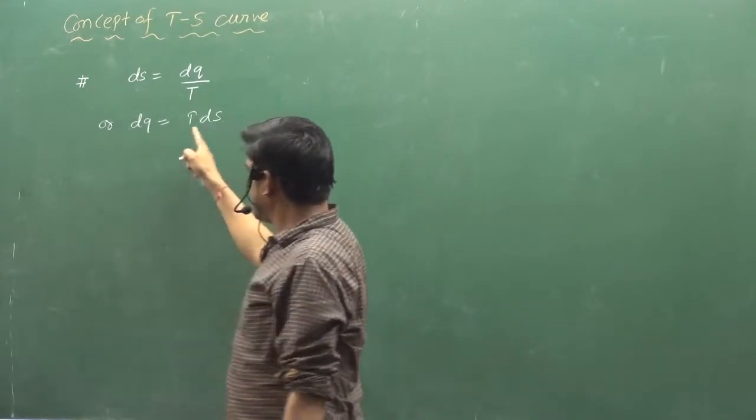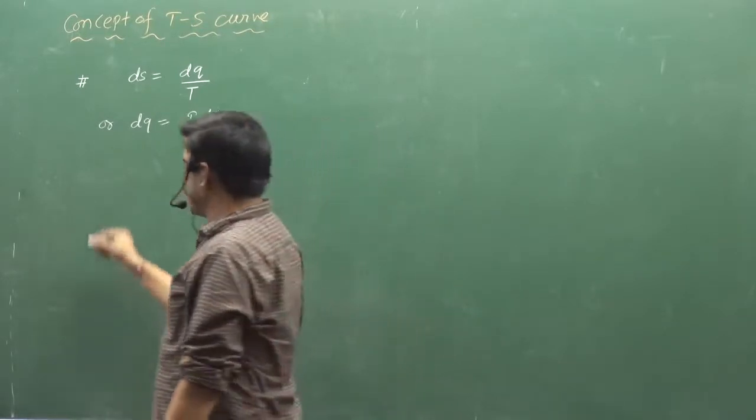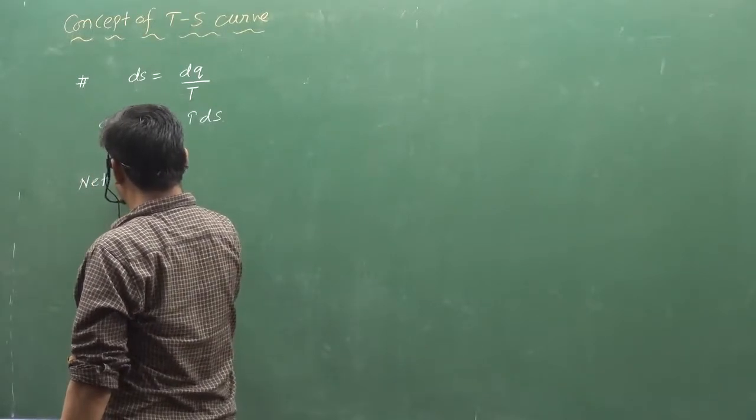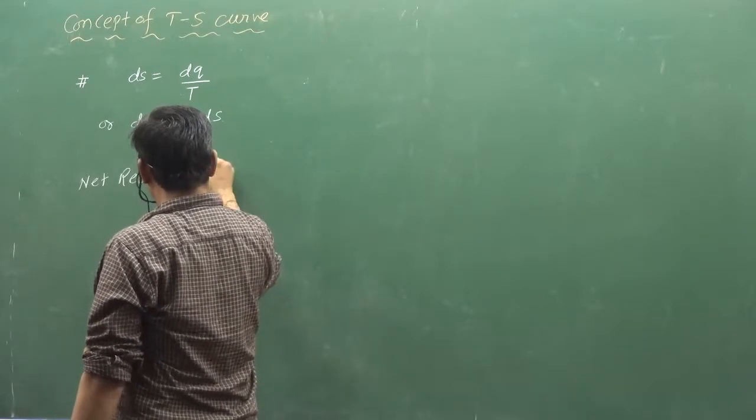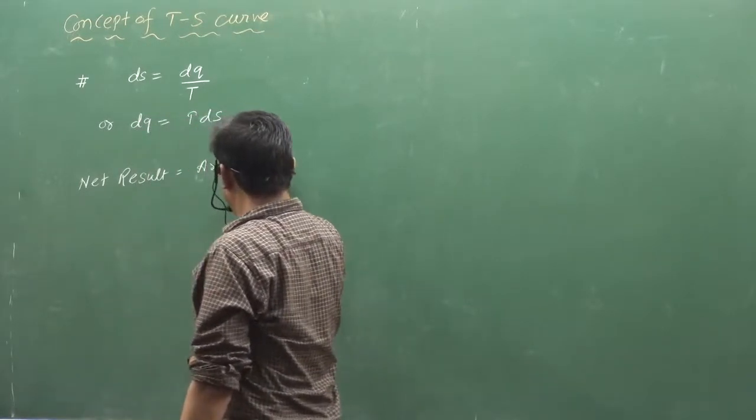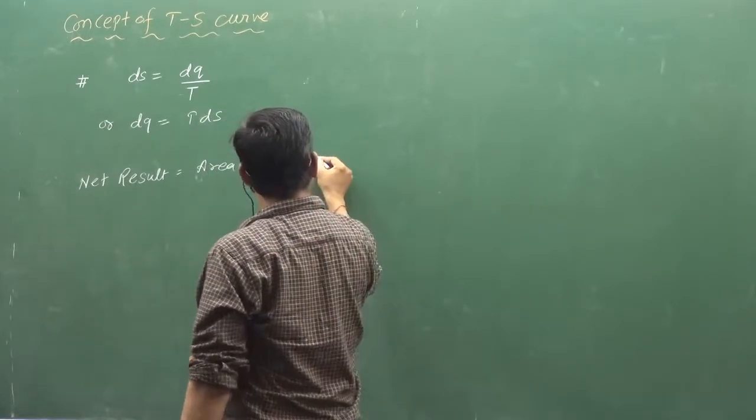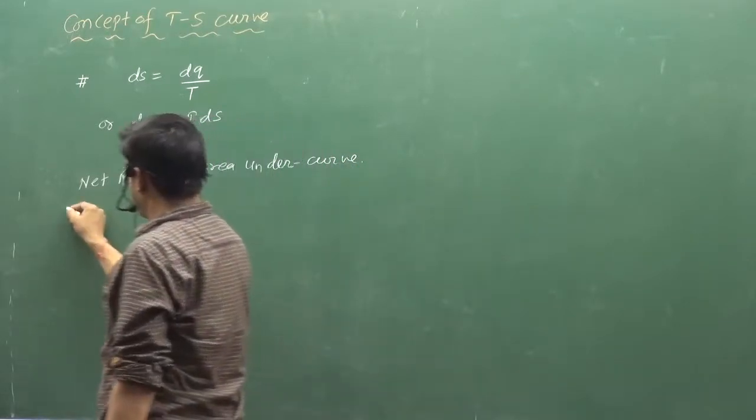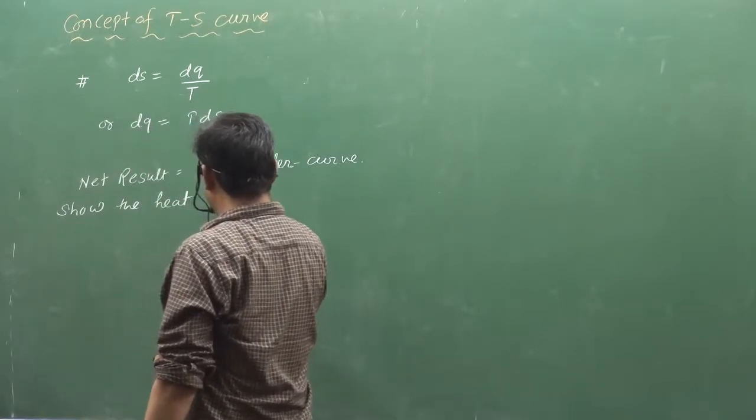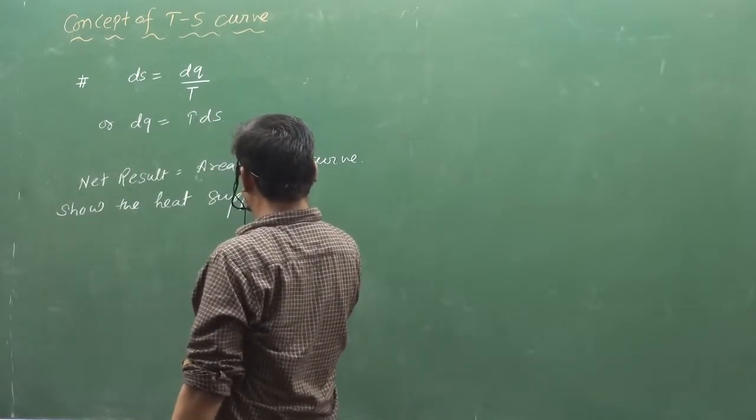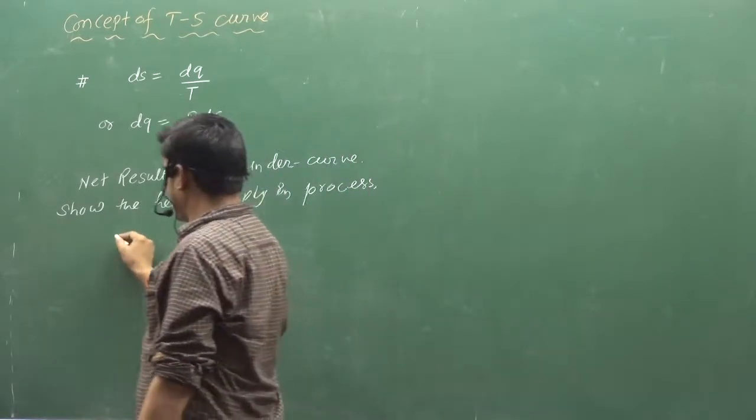That means in any area under the curve, we have heat supply. So what will be the net result? Area under curve show the heat supply in process. So this is very easy.